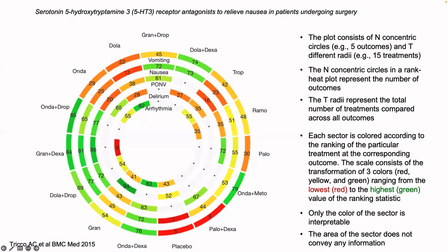For example, the ranking statistic for granisetron plus dexamethasone shows that the SUCRA for the vomiting outcome is equal to 84%, which is higher than the nausea outcome where SUCRA is equal to 81%. So granisetron plus dexamethasone is most likely the most effective for preventing nausea, vomiting, and PONV, but it performs the worst for arrhythmia.